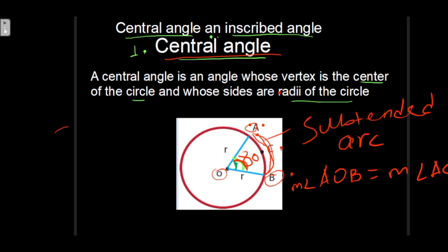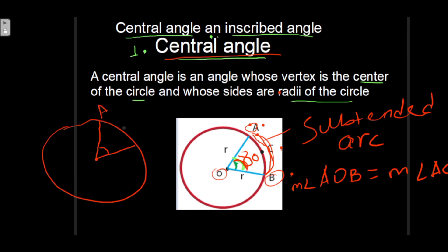So this is circle number. Now, the angle is the center of A, O, B. So the angle is A, O, B.